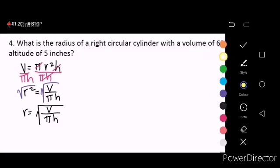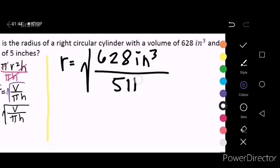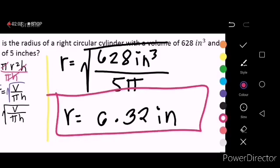In this problem, the height is 5 inches. So r now is just equal to the square root of, what's the volume again? 628 cubic inches divided by πh. The height is 5, and then you just write π. You can interchange those two because this is just multiplication. So r now, using your calculator, is just equal to 6.32 inches. That's it.